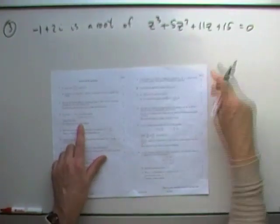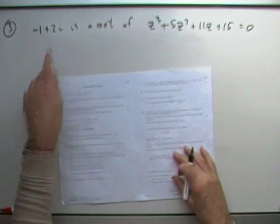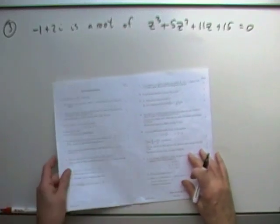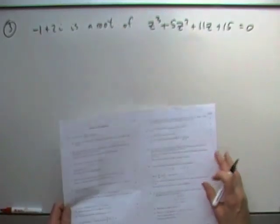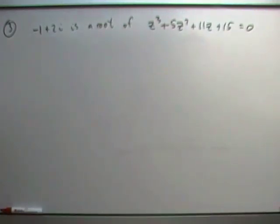Question 3: roots of a polynomial. Given this root, find the other roots and then plot them in an Argand diagram.